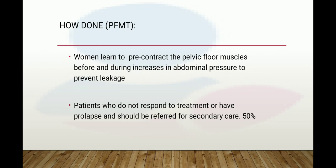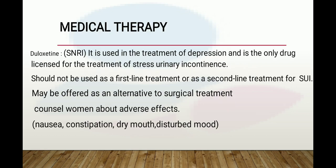Patients who do not respond to conservative treatment or who have prolapse should be referred for secondary care. Medical therapy with duloxetine, an SNRI used in depression treatment, is the only drug class for stress urinary incontinence. It should not be used as first-line or second-line treatment but may be offered as an alternative to surgical treatment. Counsel the woman about adverse effects including nausea, constipation, dry mouth, and disturbed mood.